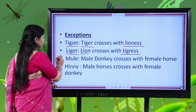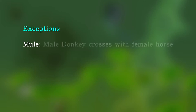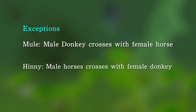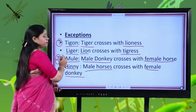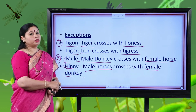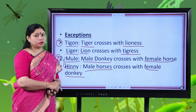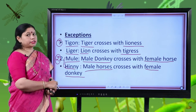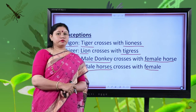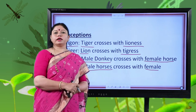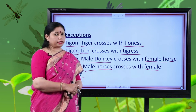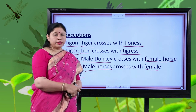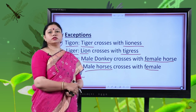Another exception is the mule. A mule is produced when a male donkey crosses with a female horse, and a hinny is produced when a male horse crosses with a female donkey. They are also hybrids, but they are non-fertile and cannot reproduce. So in nature, organisms not of the same species can sometimes reproduce, and while in most cases the progeny is not fertile, in some cases — like Tigon and liger — it is.